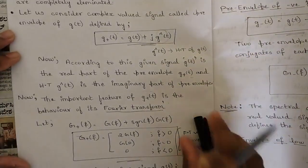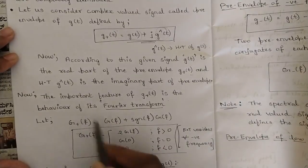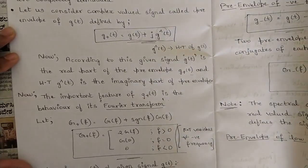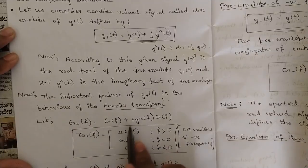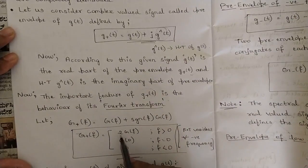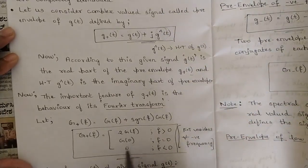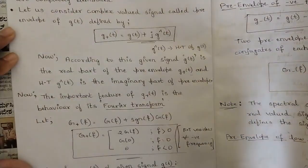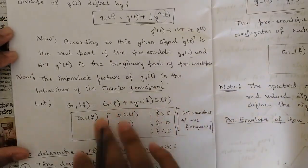Now we are representing this pre-envelope G+(t) in the frequency domain, considering only positive frequencies. G+(F) is equal to G(F) plus SGN(F) into G(F). That is, G+(F) has three values: it is 2·G(F) whenever frequency is greater than zero; it is G(0) when frequency equals zero; and it is zero when frequency is less than zero, because all negative frequency components are eliminated.